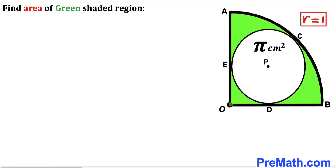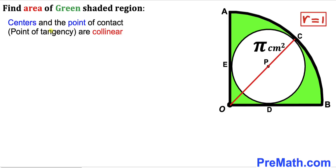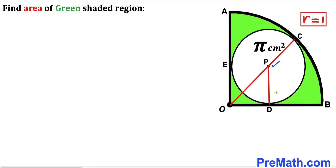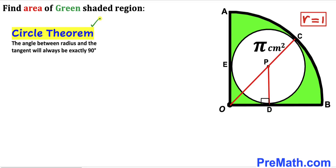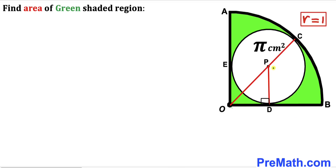In the next step I am going to connect center O with point of tangency C. Let's recall this crucial fact: the centers and the point of tangency are collinear. So center O, center P, and point of tangency C lie on the very same line. I have also connected center P with point of tangency D. By the circle theorem, the angle between the radius and the tangent line is always 90 degrees, so this angle is 90 degrees since PD is our radius and the other line is our tangent.